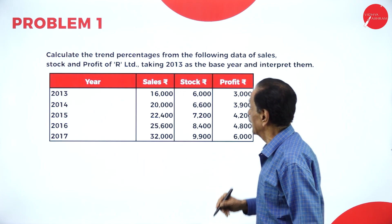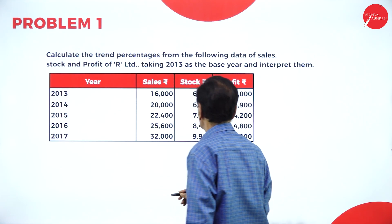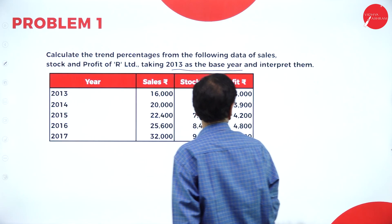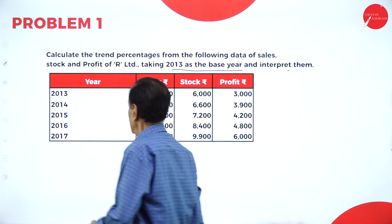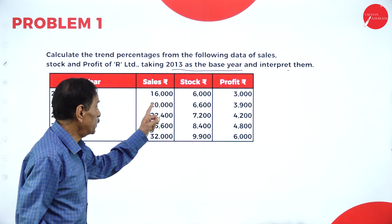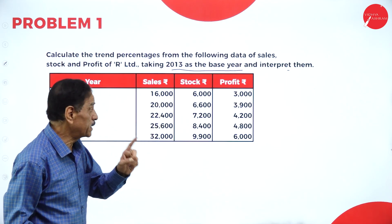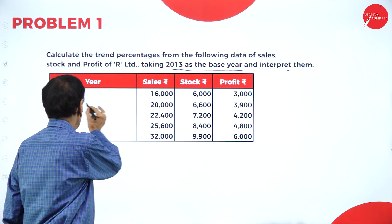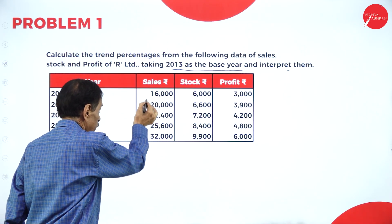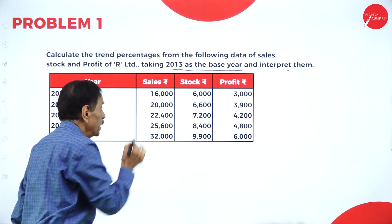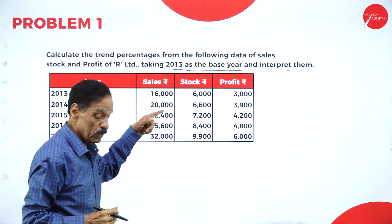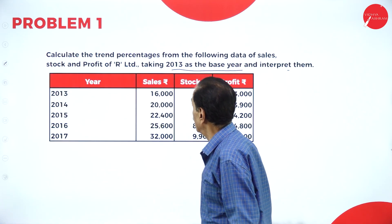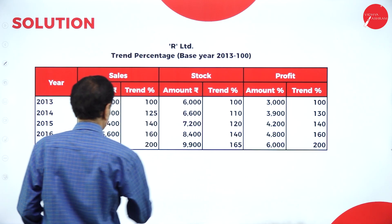Calculate the trend percentage from the following data of sales, stock, and profit, taking 2013 as the base year and interpret them. Sales: 16,000 is considered as 100 — the base. Then for 2014, 20,000 divided by 16,000 into 100; and 22,400 divided by 16,000 into 100. We take the base of sales as 100, so 16,000 equals 100.